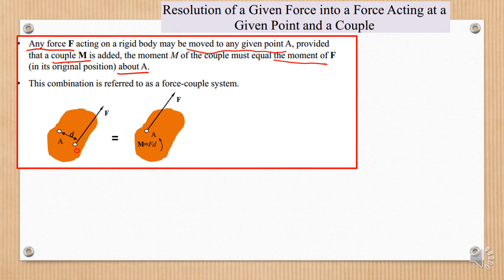For example, the moment due to this force towards point A equals 5 Nm in the anticlockwise direction. So if we want to move this force towards point A, we can move F, but we should provide a moment where the value of the moment at point A equals the moment calculated from the original position.